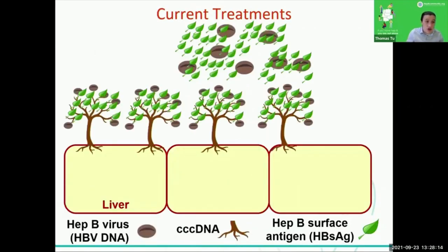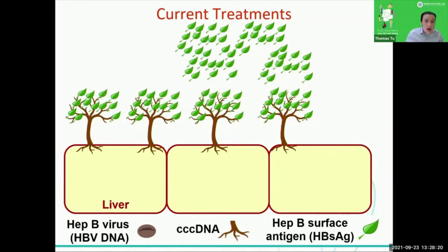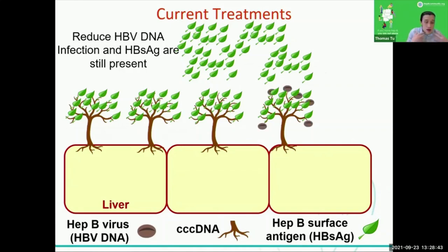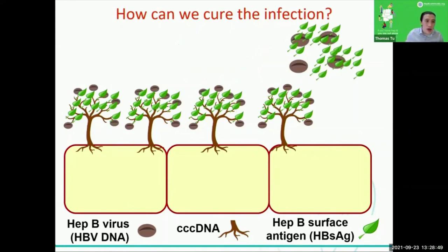When we go for treatment, we're basically covering the liver and stopping the virus from producing new virus DNA — new amounts of virus. However, the CCC DNA, the infected cells, and the surface antigen are all still there. So there's still risk, because when we stop taking those treatments, the virus comes back and new virus is produced.